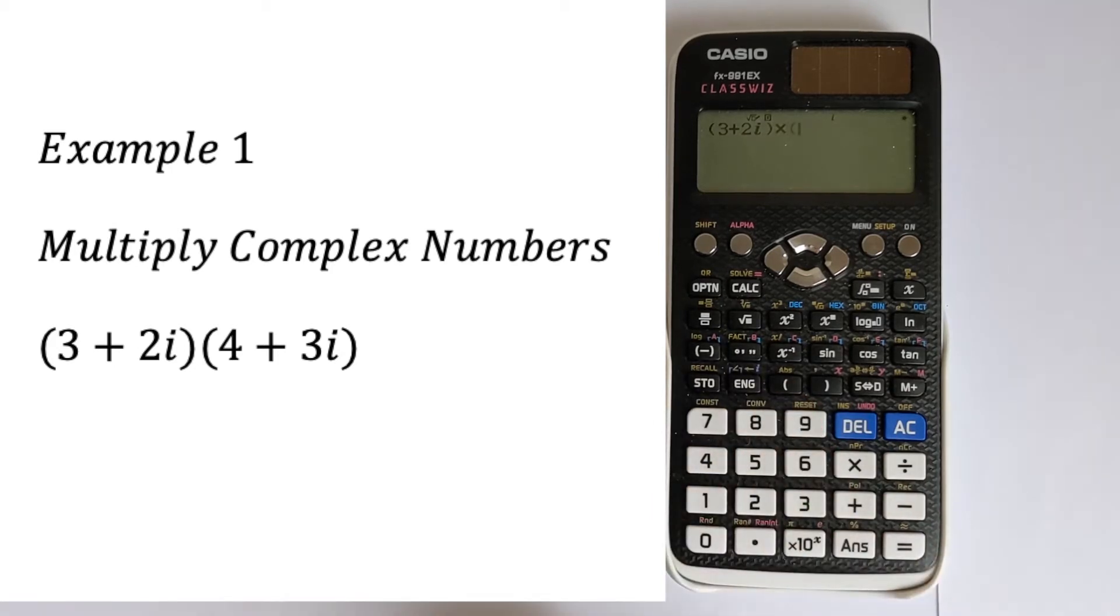simple multiply sign, it just works as normal. Then 4 plus 3i, close the brackets, equals, and it will multiply that complex number for you.